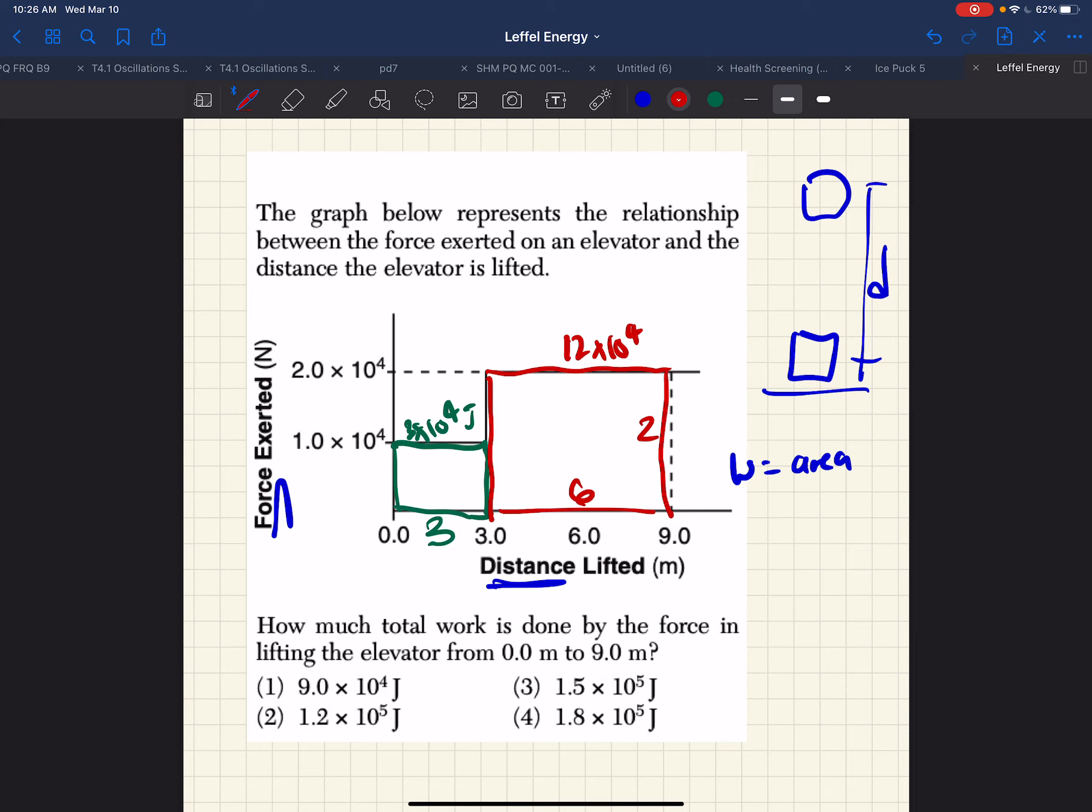And 12 times 10 to the 4th plus 3 times 10 to the 4th is 15 times 10 to the 4th, which, if we move the decimal place over 1 and make that 1.5, then that's 1.5 times 10 to the 5th joules, and that's why it's choice 3.